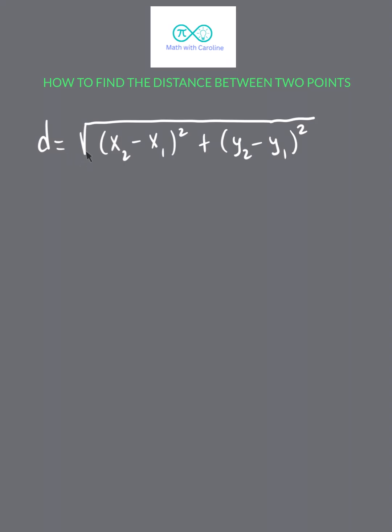It's equal to the square root of the quantity x2 minus x1, and you square that quantity, plus the quantity y2 minus y1 squared.